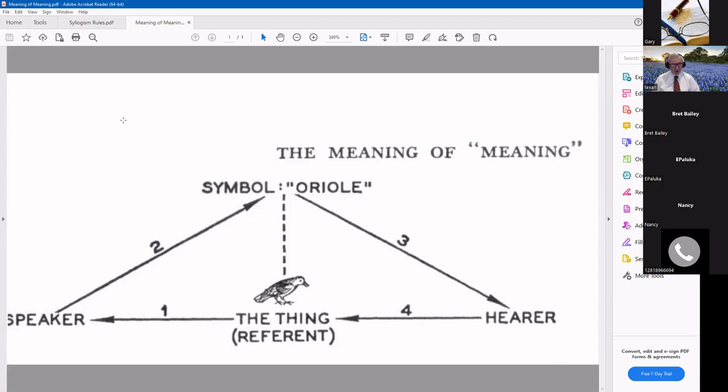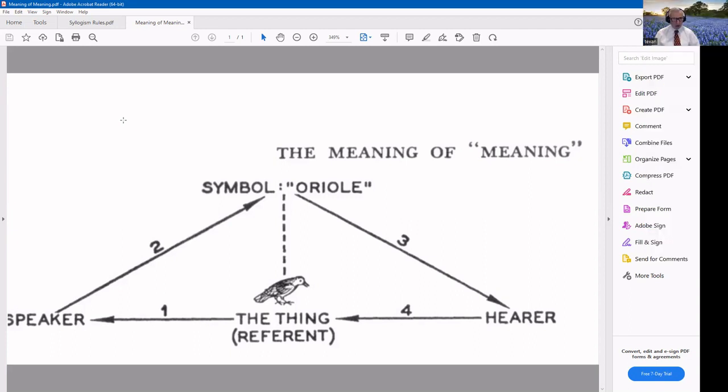So when it comes to trying to convey a message to someone and have them understand what you want to convey, you have to agree upon the definition of the thing that you're talking about. If the word oriole that you want to convey the image of a bird, you have to be sure that the hearer is also visualizing a bird, if you will, that is the Baltimore oriole. If not, he never will.